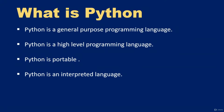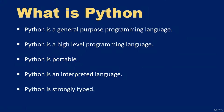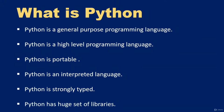Python is strongly typed, meaning it doesn't convert data from one type to another type automatically. Python also has a huge set of libraries — a Python library is a collection of programs you can incorporate into your own program without writing code for them.